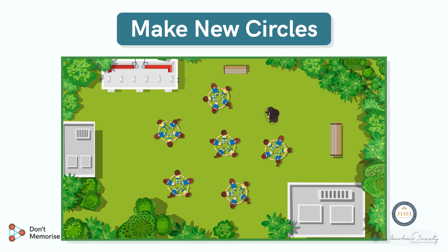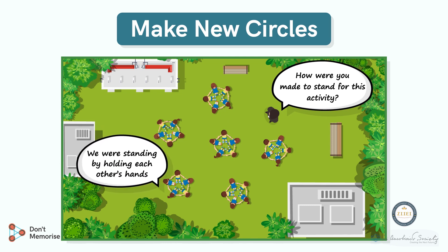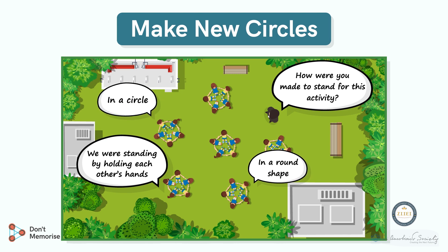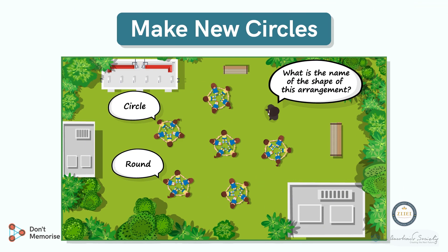We had asked the students to sit in an arrangement of a circle. Now ask them how or in which shape they were standing at the beginning of the activity. Students may respond by saying they were standing holding each other's hands, or in a round shape, or in a circle. Further, ask them what is the name of the shape of this arrangement. Students might answer round or circle. Some students may respond in their native dialect as well.